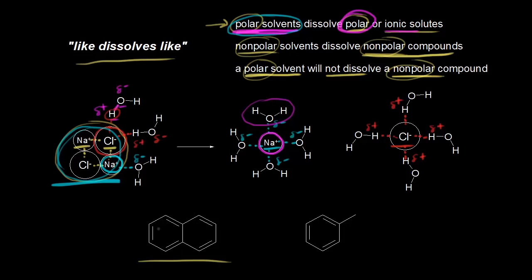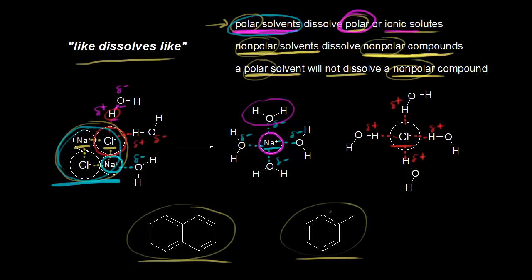Naphthalene is a solid with a very distinctive smell. The first time I smelled naphthalene in the lab, it reminded me of my grandparents' house because they had mothballs made of naphthalene. Naphthalene is nonpolar because it's composed of only carbons and hydrogens — it's a hydrocarbon. So naphthalene is nonpolar, and you would need a nonpolar solvent to get it to dissolve. Toluene is a nonpolar solvent — also a hydrocarbon. So if you take solid naphthalene and liquid toluene, naphthalene will dissolve in toluene. Like dissolves like.